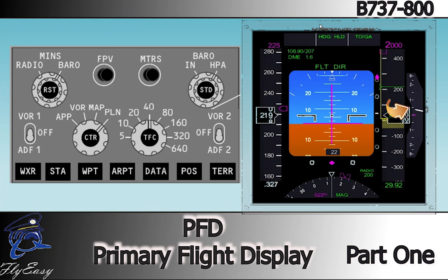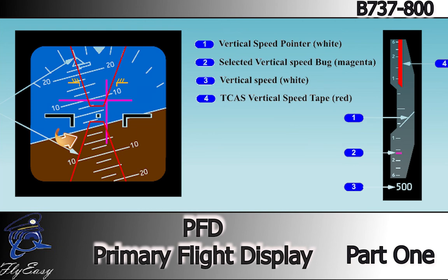The vertical speed is displayed to the right of the altitude tape with a pointer and digital readout. Vertical speed is digitally displayed above or below the vertical speed display when vertical speed is greater than 400 feet per minute — above with positive vertical speed and below with negative. The selected vertical speed bug shows the selected vertical speed when in the AFDS vertical speed pitch mode. TCAS resolution advisories are displayed in the attitude indication area. Flight path vector (FPV) symbols are also available, showing the current flight path vector.